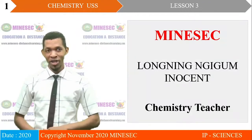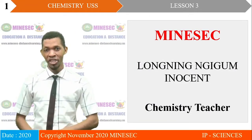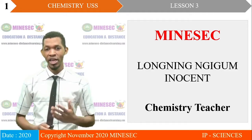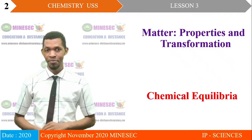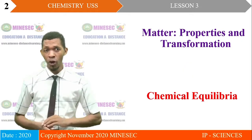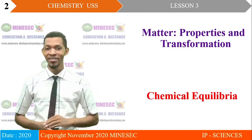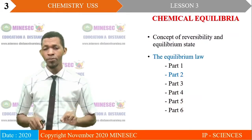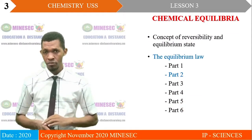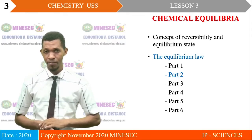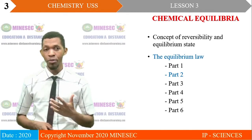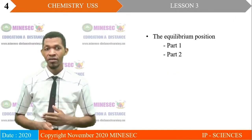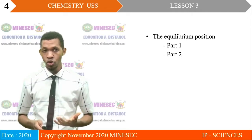Welcome to Lesson 3 of your Distance Education Program in Chemistry for Upper Sixth Science. I am Longning Gingu, your chemistry teacher. We are still on the topic Matter, Properties and Transformation, and the subtopic Chemical Equilibrium. This subtopic will be treated in the following lessons: Concept of Reversibility and Equilibrium State; Equilibrium Law Part 1 to Part 6; and Equilibrium Position Part 1 and 2.